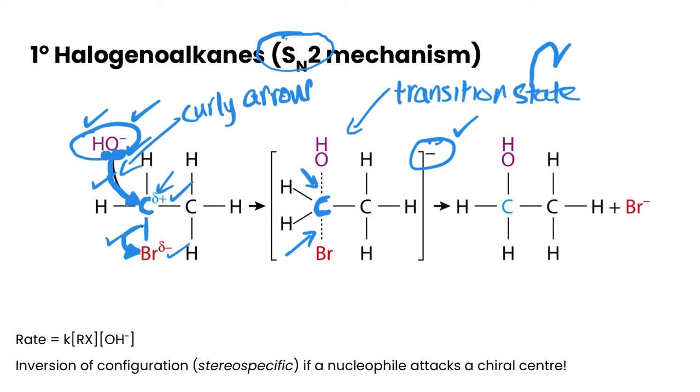And then our final part of our mechanism, we're showing our alcohol formed and the X minus. So in terms of why this is called SN2, the 2 refers to the fact of the molecularity of the reaction. So basically, molecularity just means how many molecules or ions take part in the rate determining step of the mechanism. This particular mechanism only really has one step. So it is the rate determining step.